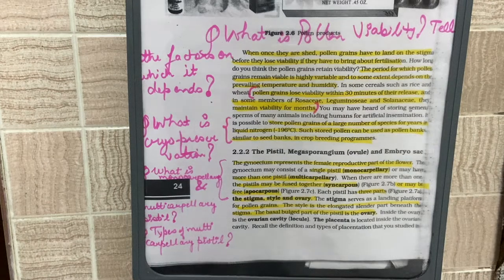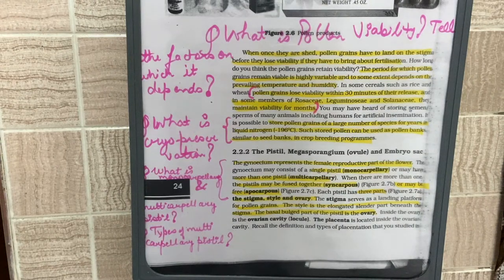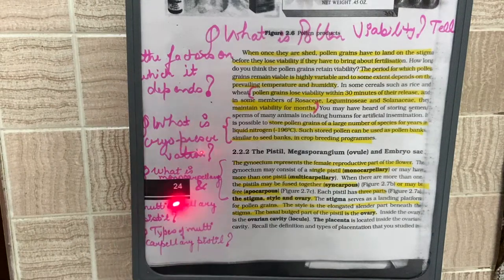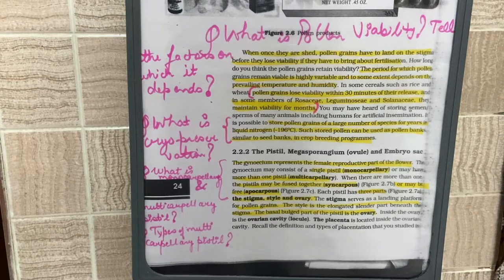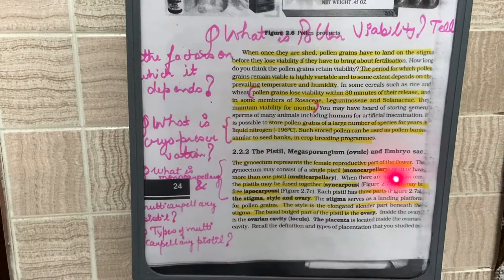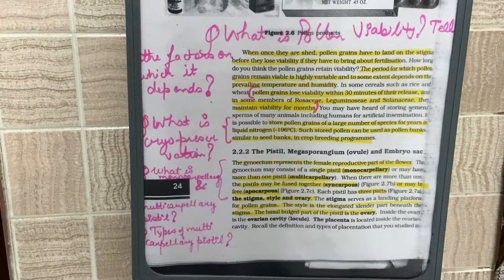Hello students, this is the second video of chapter 'Sexual Reproduction in Flowering Plants.' Today we will talk about the female part of the flower. From page 23, it is already discussed in the previous video. Let us see what the important questions are from this paragraph.